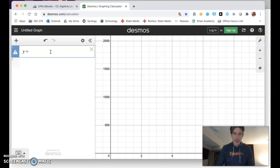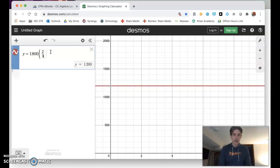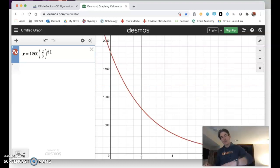Here we go. Y equals, I'm going to type in 1800, and then two divided by three to the x power. I've got to close my parentheses first. There we go. And now I see that nice exponential decay curve. I see right here, I've got a starting value of 1800. And then maybe you want to hone in on a couple other points here. There's one, 1200. There's two, 800.